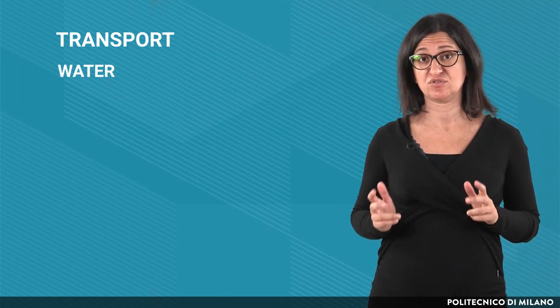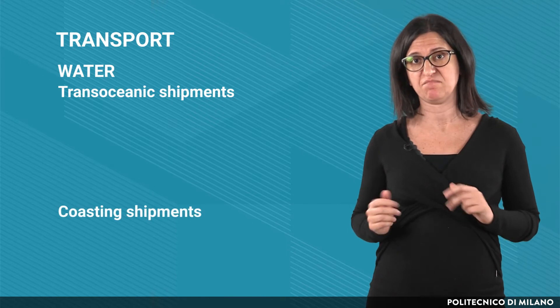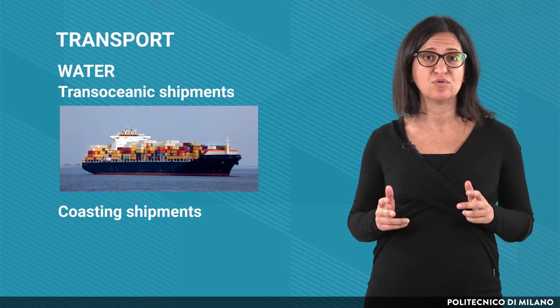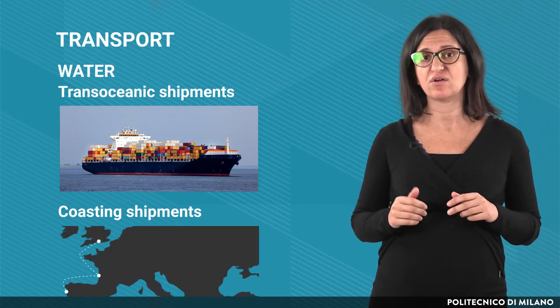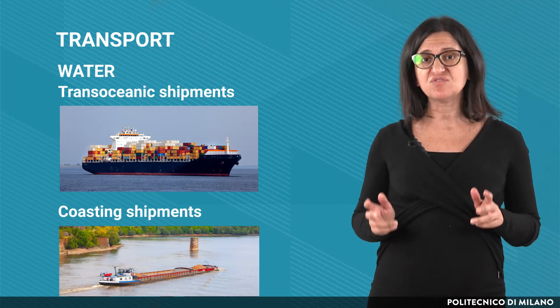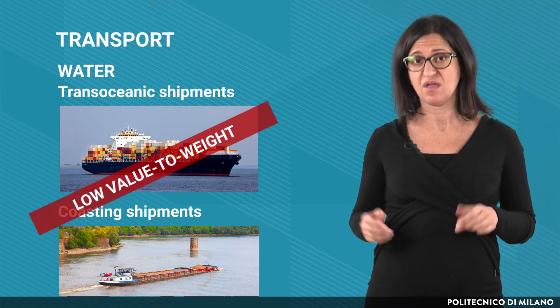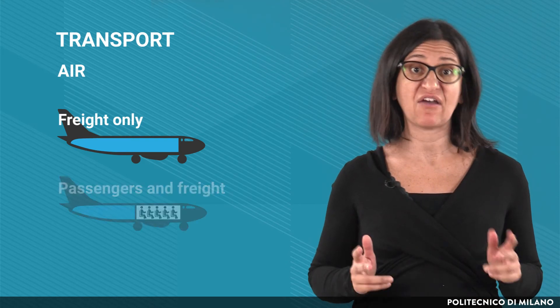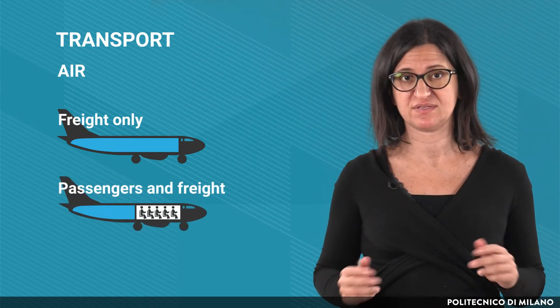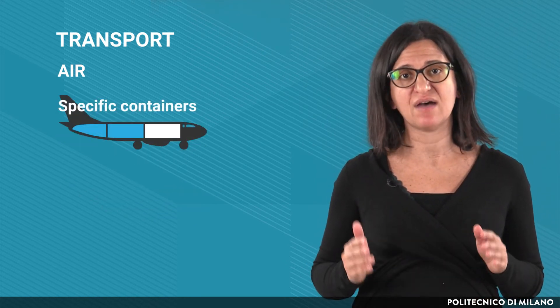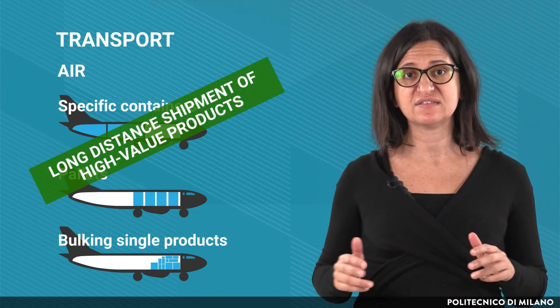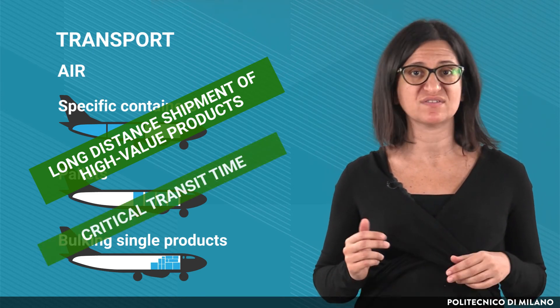For water transport, there may be transoceanic or coasting shipments. Transoceanic shipments are international and made by big ships, while coasting and internal waterways refer to shipping goods for short-to-medium distances between points on the same coast or along internal navigable waterways. Water transport is used for commodities with a low value-to-weight relationship, or for which transport cost is a significant portion of the selling price. Finally, for air transport there are two main options: freight only or passenger air freight, if the plane is not completely dedicated to the shipment of goods. Air transport is used for long-distance shipments of high-value products and/or when transit time is very critical.